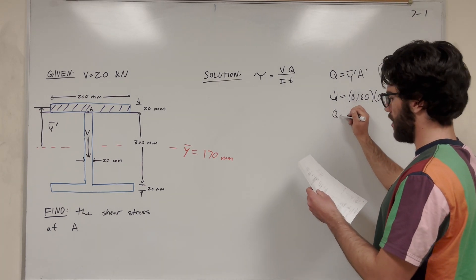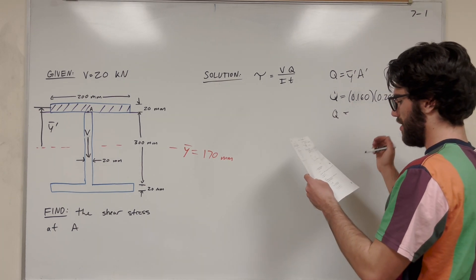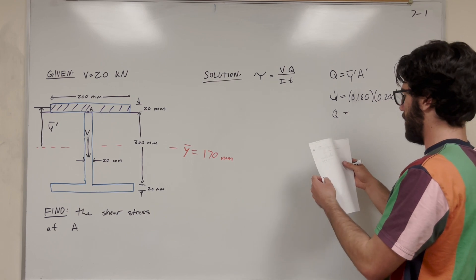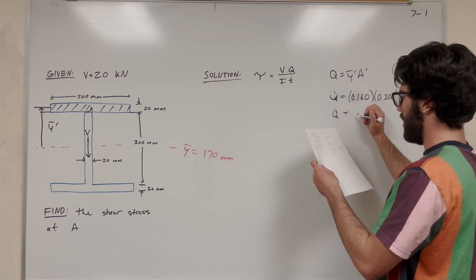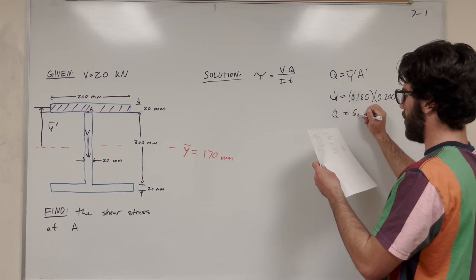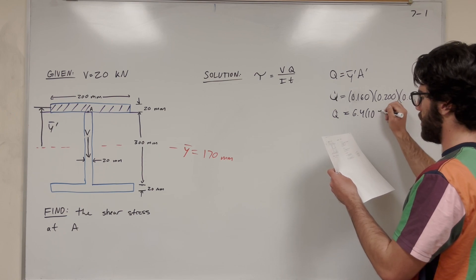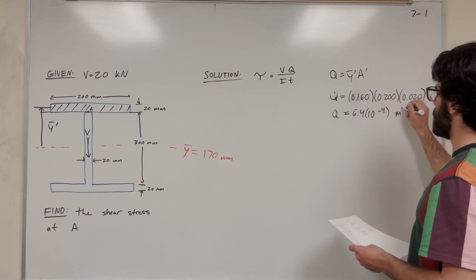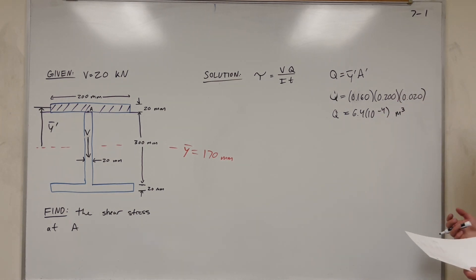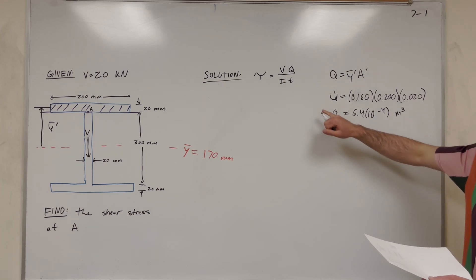And so you solve for Q here. So it's going to be 6.4 times 10 to the negative fourth meters cubed. So we have Q now. So let's find what else.